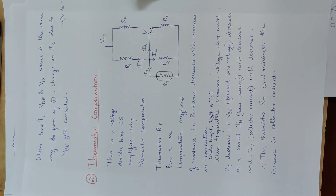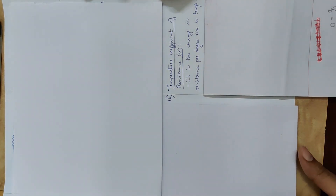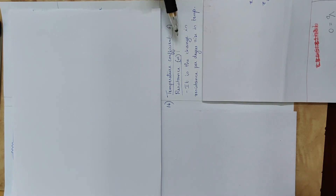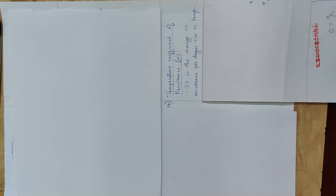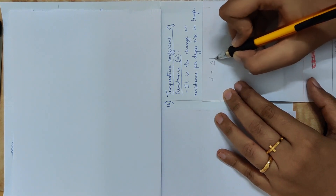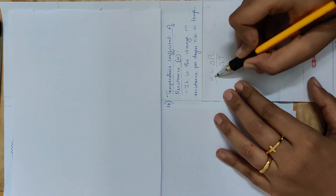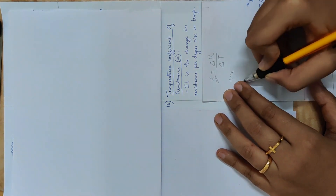Now we need to cover the basics of temperature coefficient of resistance. The temperature coefficient of resistance is alpha. It relates temperature and resistance. The definition is: alpha is the change in resistance per degree rise in temperature. This alpha can be positive or negative.